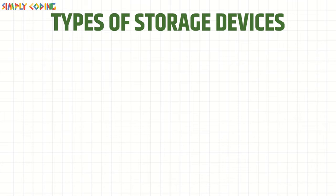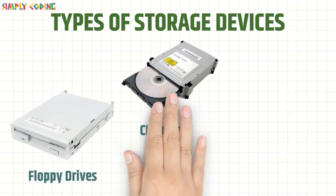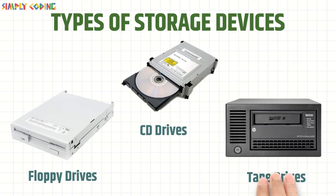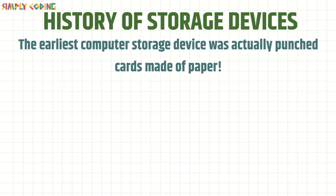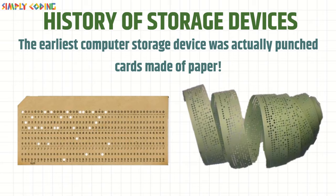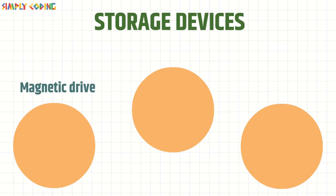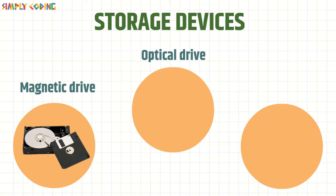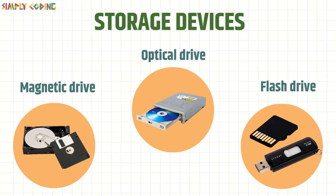There are many different types of storage devices, such as floppy drives, CD drives, tapes, etc. The earliest computer storage device was actually a punch card made of paper. Now we have storage devices which are either magnetic, optical, or flash memory devices. Let's look at each one of them.